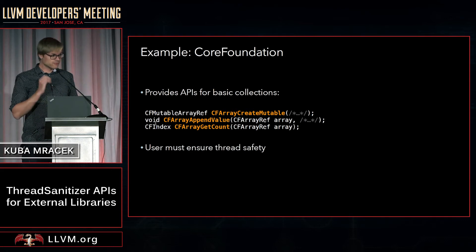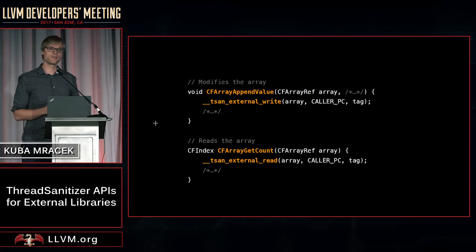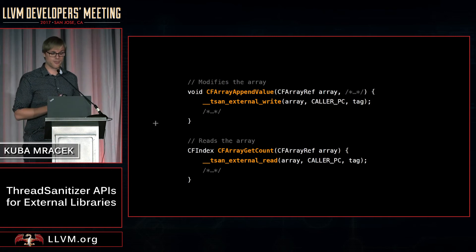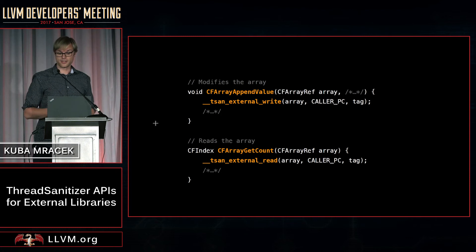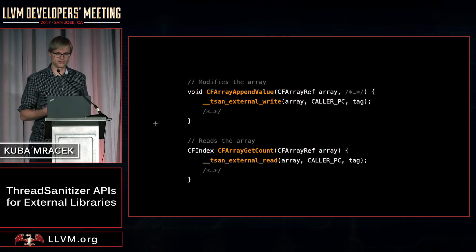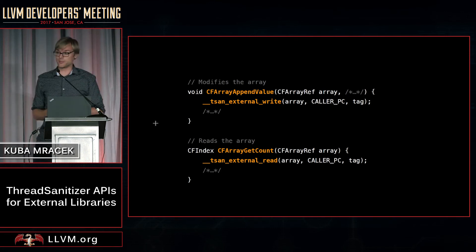These APIs expect that the user provides thread safety, so the user has to make sure they don't call two mutating APIs at the same time from multiple threads. What the CoreFoundation team did is insert these callbacks into the API. CFArrayAppendValue, which modifies the array, now calls tsan_external_write. The other function, which just reads from the array, calls tsan_external_read. In those callbacks, we provide the pointer to the array — the address of the array we want to check. That's basically all we had to do to start finding races against this API.